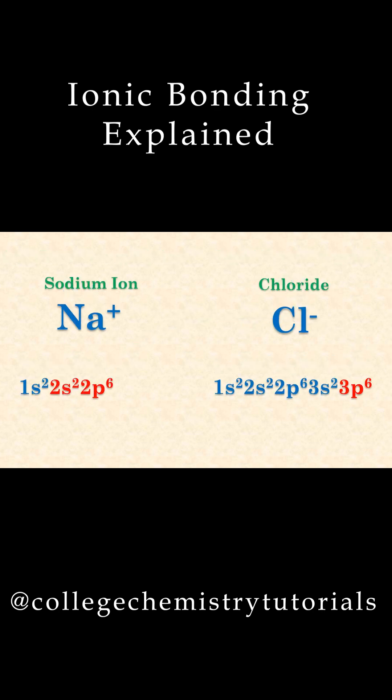This results in the sodium cation and chloride anion. Notice how sodium now has a full octet in its new valence shell and is isoelectronic with neon. Chloride also has its valence shell full and is isoelectronic with argon.